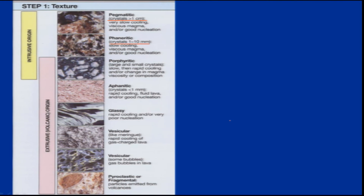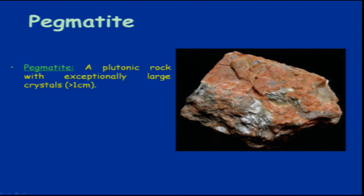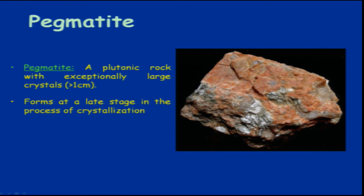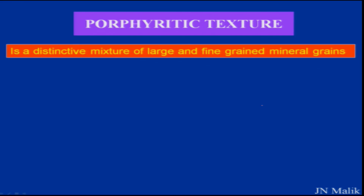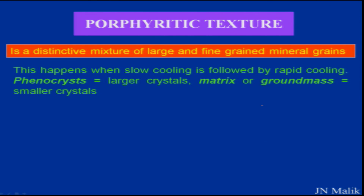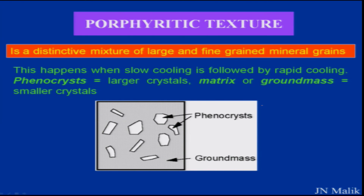Coming back to texture examples: pegmatites are plutonic rocks with very large crystals greater than 1 centimeter, forming at the late stage in the process of crystallization. Porphyritic texture is a distinct mixture of large and fine-grained minerals, happening when slow cooling is followed by rapid cooling. The larger crystals are termed phenocrysts and the fine-grained matrix is called the ground mass.